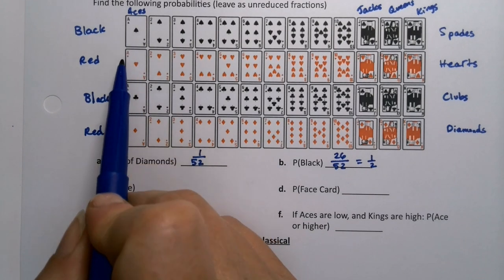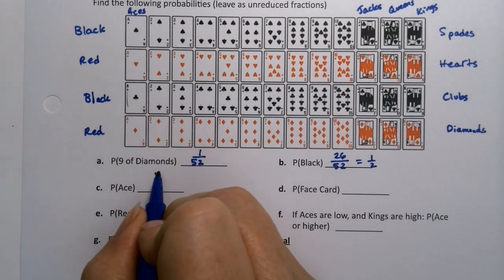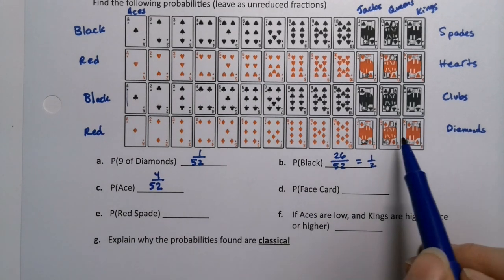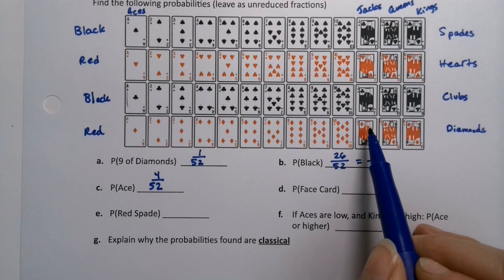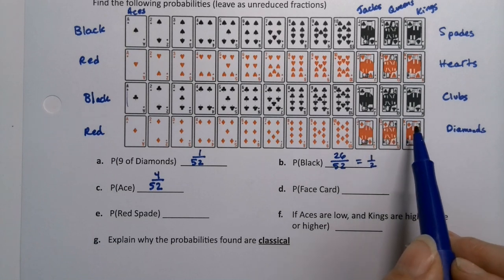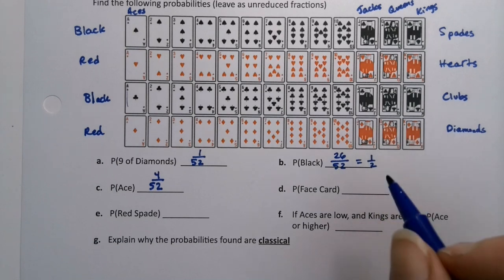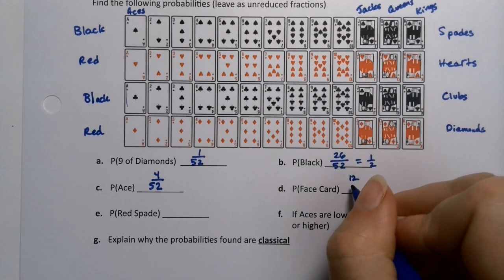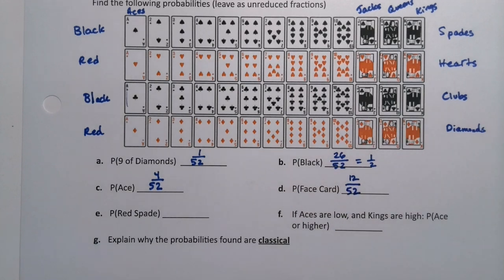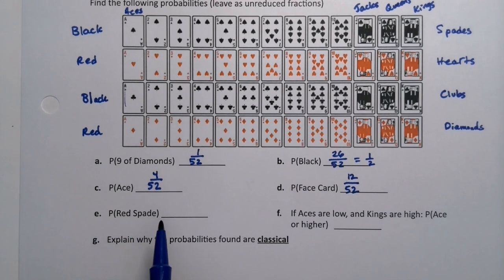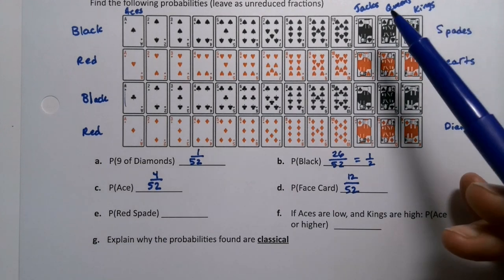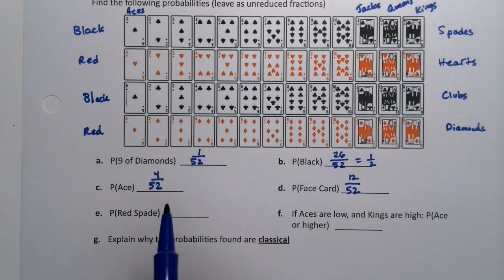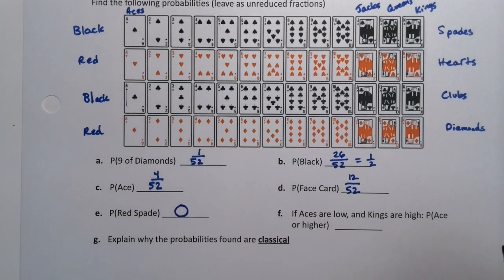What about an ace? There are four aces, so it's 4 out of 52. What about a face card? These are the face cards, because they literally have faces on them — they have noses and mouths and things like that. So that would be 12 of them, because there are three per suit, out of 52. What's the probability of a red spade? Spades are black, so the chance of getting a red spade would be zero — there are no red spade cards.